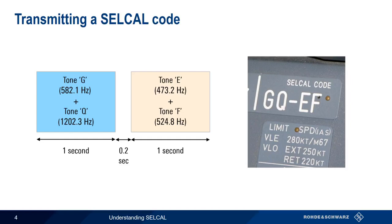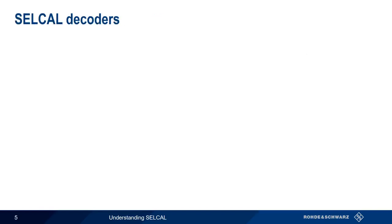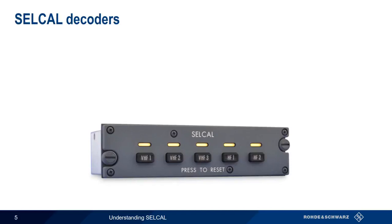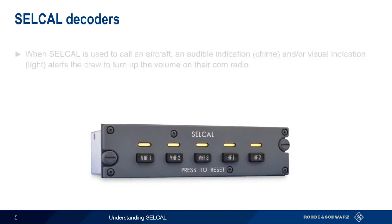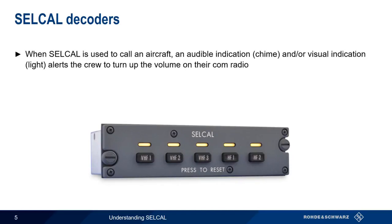So the entire two-tone SELCAL code would sound something like this. Aboard an aircraft, a SELCAL decoder is used to detect the presence of that aircraft's SELCAL code. When the plane's code is detected, an alert is generated in the form of an audible indication such as a chime, and/or a lighted visual indication. This alerts the crew to turn up the volume on their communications radio.